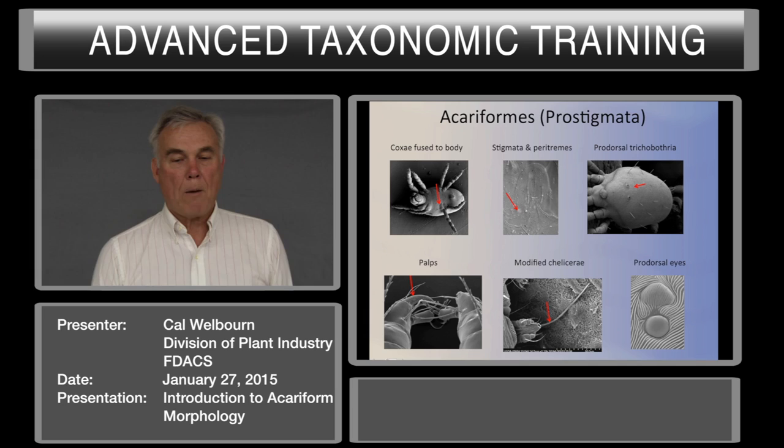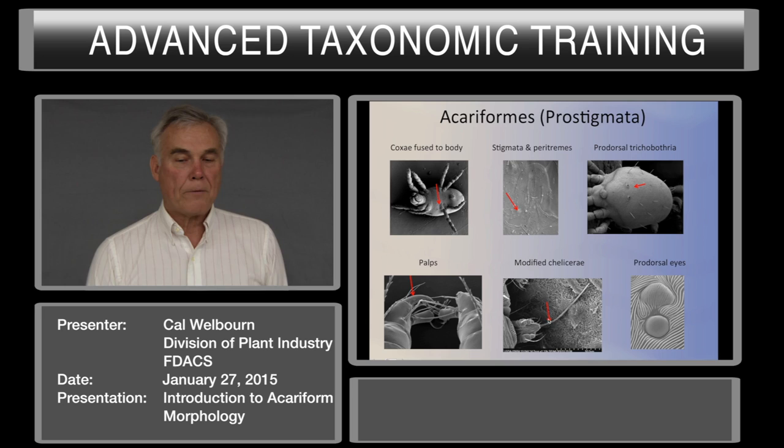Chelicerae are almost always modified in the Prostigmata. In the case of a tetranychoid, all that you see are the two movable stylets—that's all that's left of the chelicerae. Most Prostigmata have eyes, although they don't visually see; we suspect they can tell light from dark.